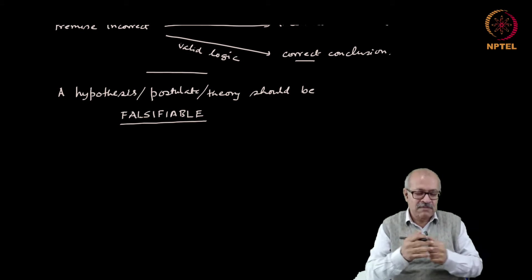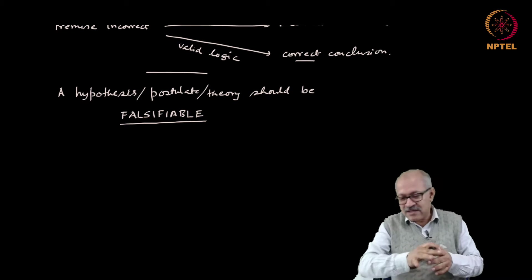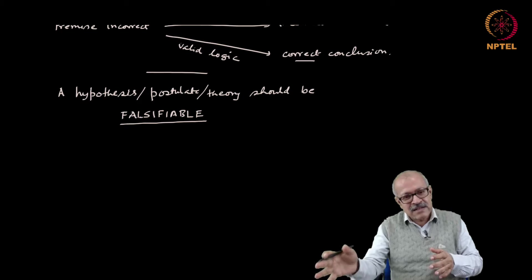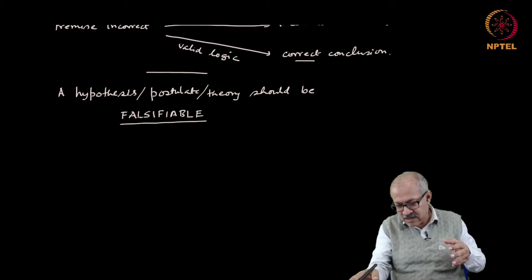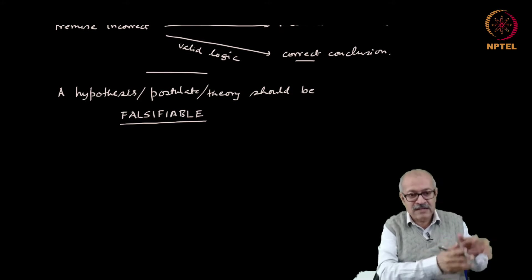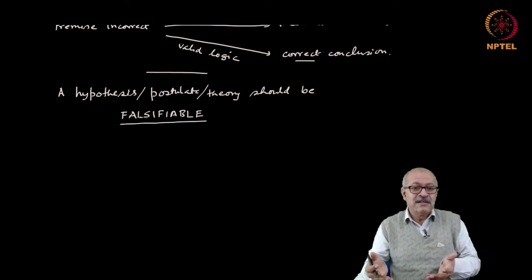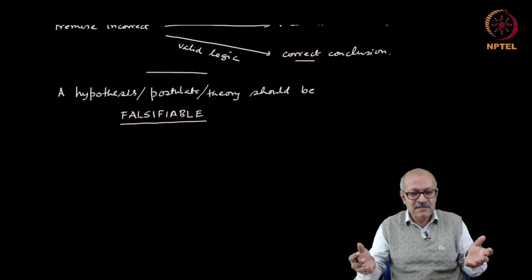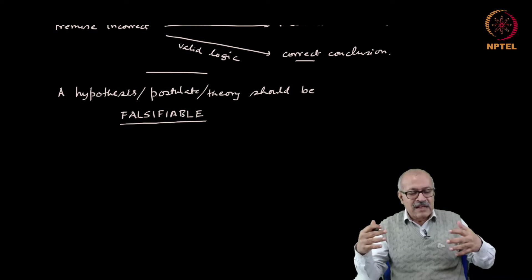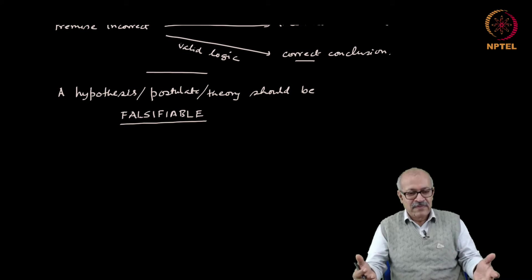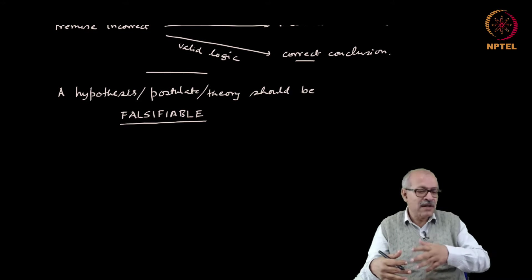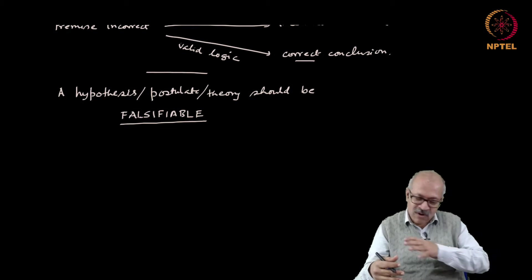Suppose you have proposed a hypothesis which ultimately is tested and the test comes negative. That means the hypothesis has a logical consequence which can be tested, it has been tested and found to be wrong, which means the hypothesis is rejected. That is not a disgrace for the scientist. It is in no way a disgrace for the scientist because it is the task of the scientist to propose as many hypotheses as possible, and if your hypothesis ultimately turns out to be false, it is not a problem at all.